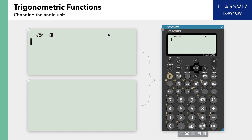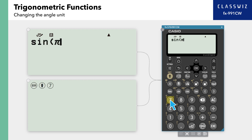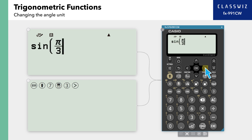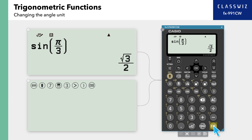In this example, let's calculate sine pi over 3. Press Sine. To enter pi, press Shift, then 7. Now enter Fraction, 3, right, and closing parenthesis. Press Execute to return square root of 3 over 2 as the result.